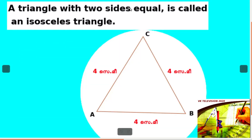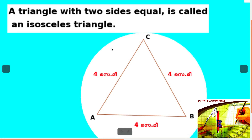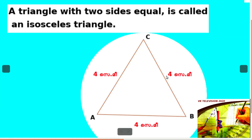A triangle with two equal sides is called an isosceles triangle. Now consider triangle ABC where all sides are equal. Such triangles are called equilateral triangles.